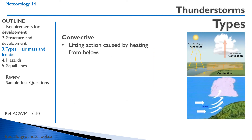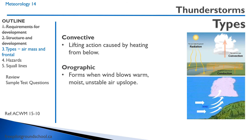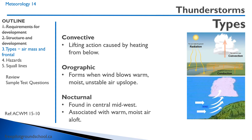In a convective thunderstorm, the lifting action is caused by heating from below. During the daytime, hot air rises up into the unstable atmosphere and forms thunderstorms — these are the most common type on a hot summer day. An orographic thunderstorm forms when wind blows warm, moist, unstable air up a slope — these occur on the edge of mountains. Nocturnal thunderstorms occur at night, typically in the central Midwest, and are associated with warm, moist air aloft.